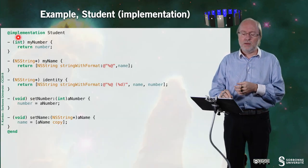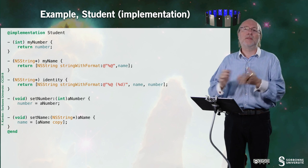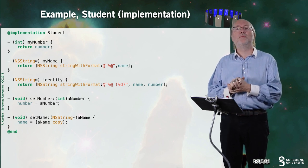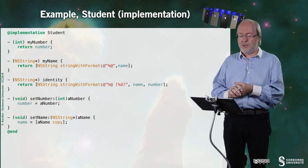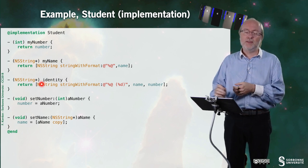Here, this is my getter that provides me the number of the student, the same for the name, and here for the identity.